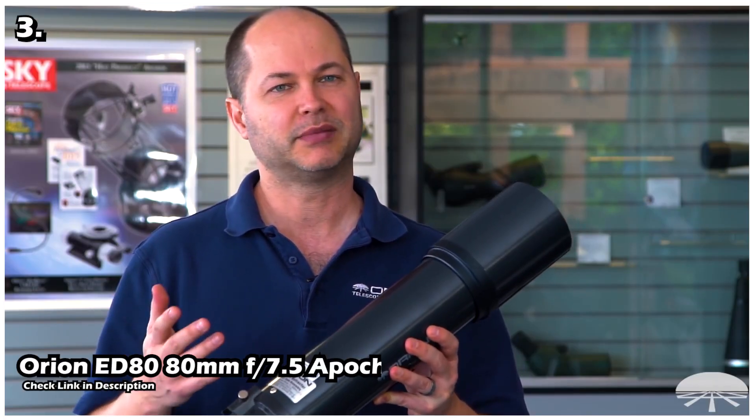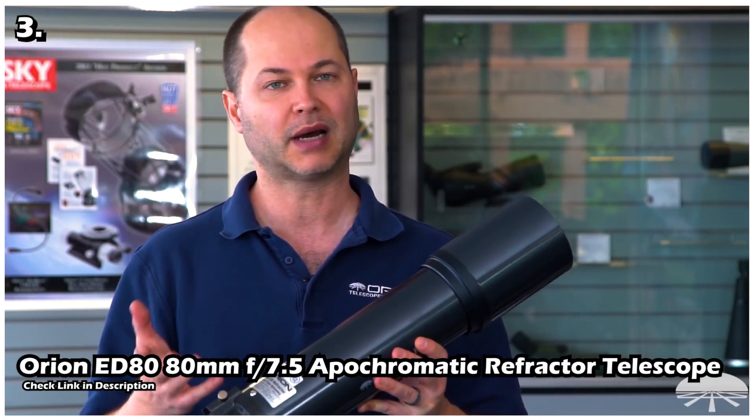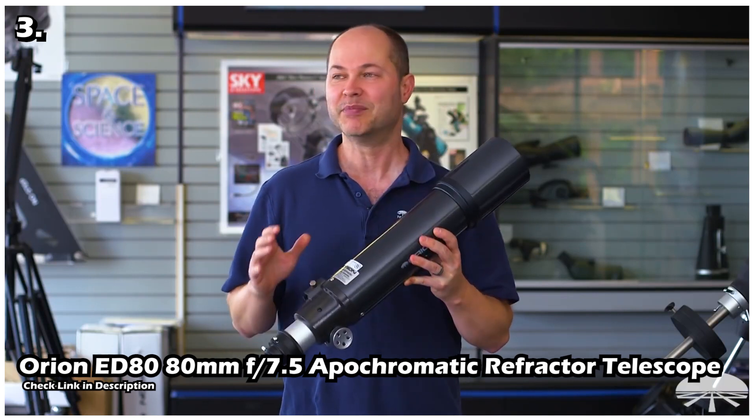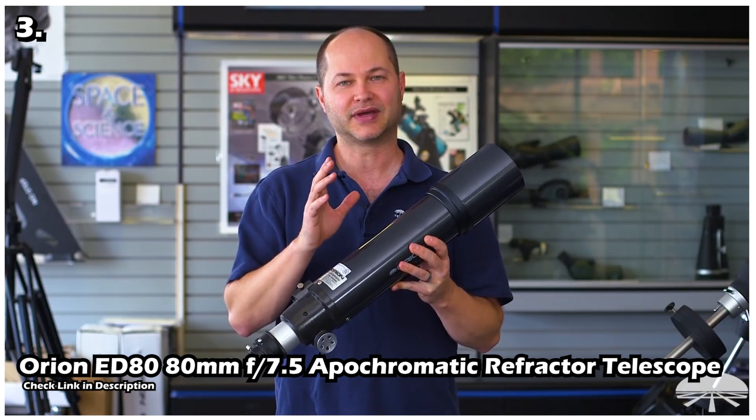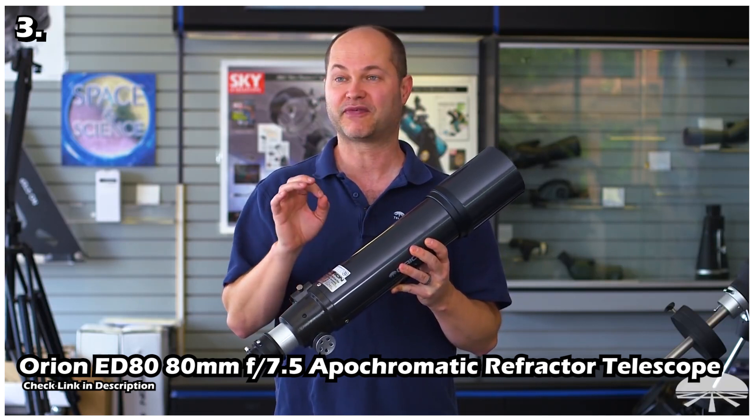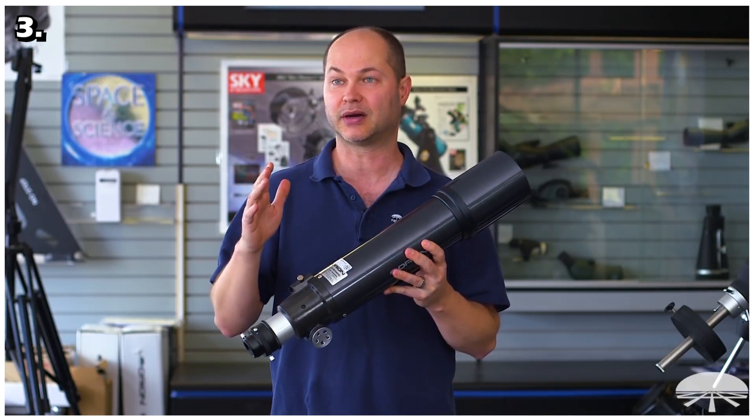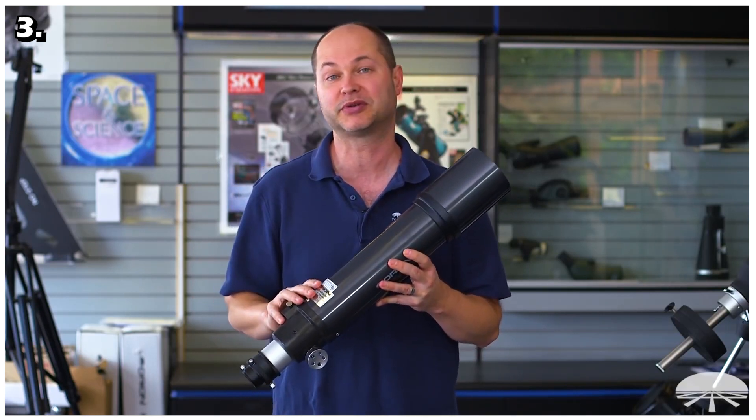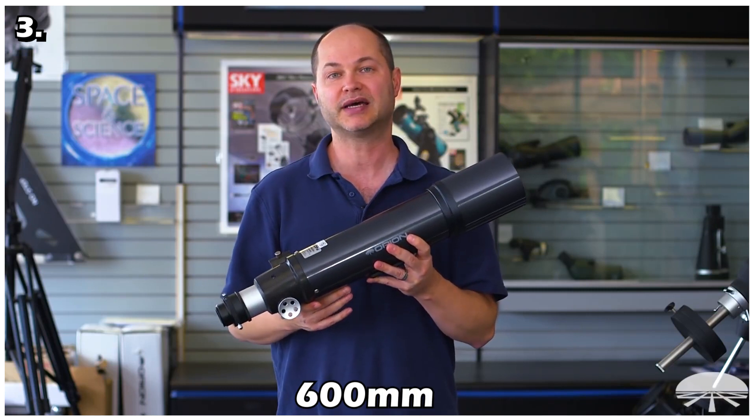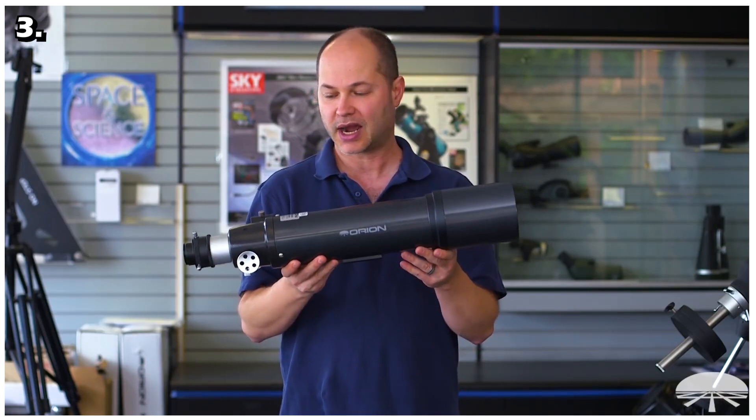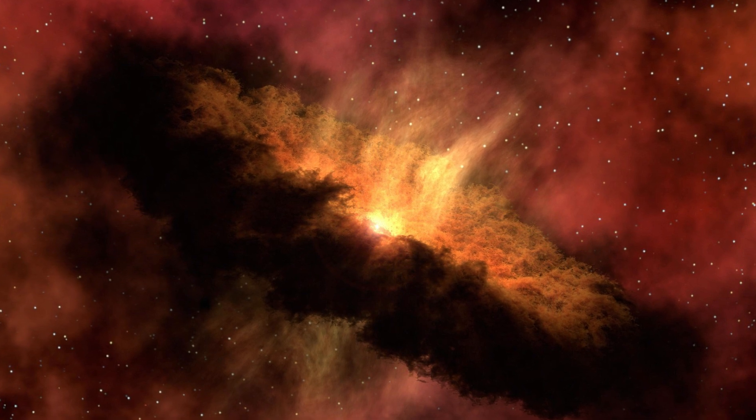Our third telescope is Orion ED80 80mm apochromatic refractor telescope. If you want to buy a premium apochromatic refractor telescope without having to spend a lot of money, then this telescope is for you. The Orion ED80 80mm is one sweet telescope for astrophotography and observing deep space objects. This telescope has a focal length of 600mm. The ED80 is wonderfully suited for visual applications on both solar system and deep sky objects.